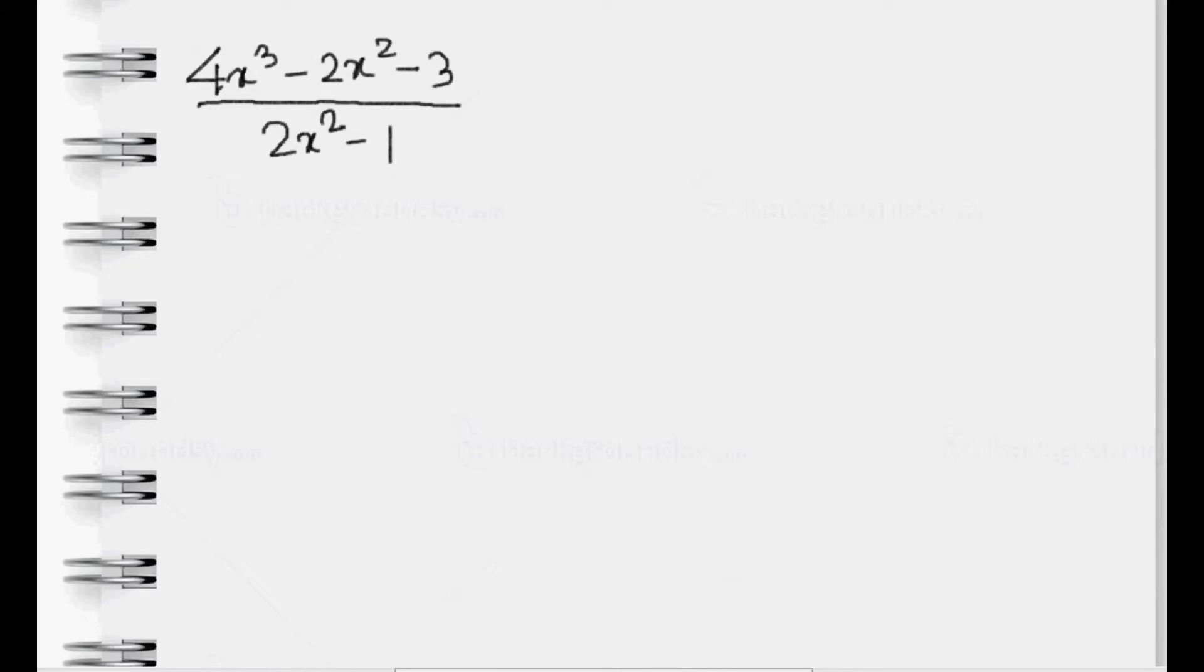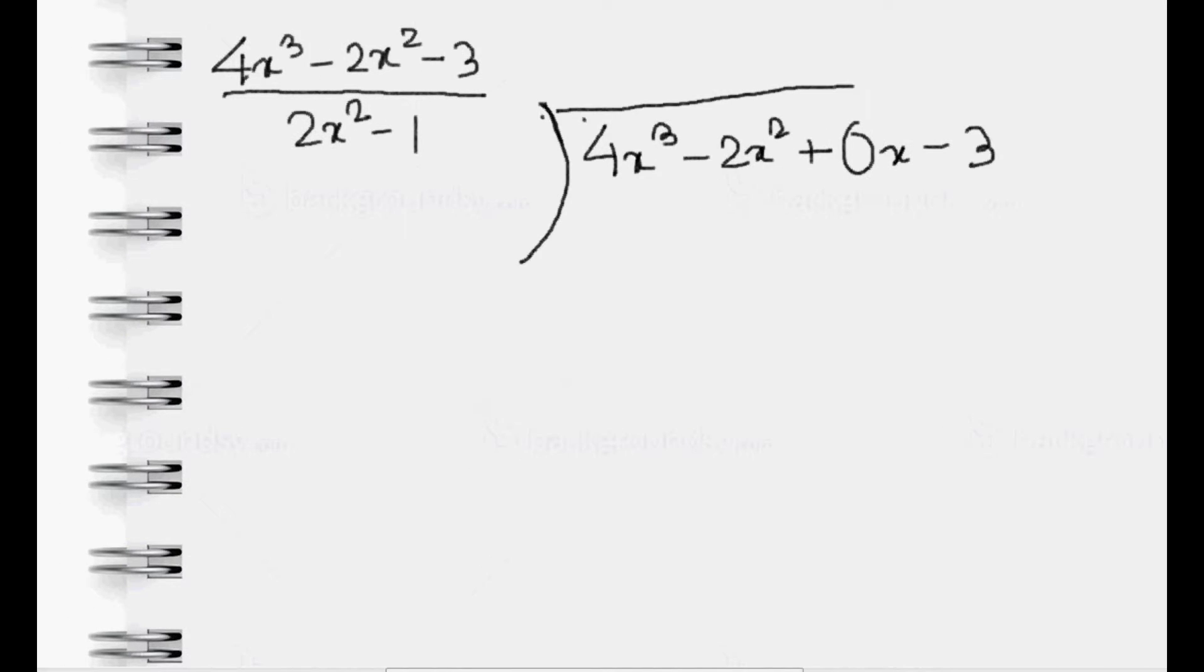We write 4x³ - 2x² + 0x (because there is no term for x, so we added 0x) - 3. Now we write the divisor here: 2x² + 0x (because there is no term for x, so we added 0x).